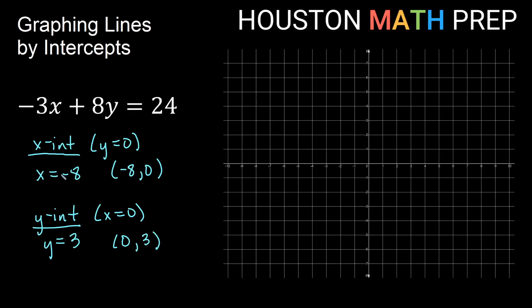If we go over to negative 8 on our x-axis, we'll be way over here to the left, and if we go up 3 positive 3 on our y-axis, we'll be here. Once we have our two points plotted, we can go ahead and just draw straight line through those points to give us our graph for the line. There's our graph of negative 3x plus 8y equals 24.